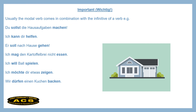There is a difference between 'du sollst die Hausaufgaben machen' — you should do the homework — and 'du darfst die Hausaufgaben machen' — you are permitted to do the homework. So when you use a modal verb with another verb, only the modal verb is conjugated. For example: 'Ich kann dir helfen' — I can help you. 'Er soll nach Hause gehen' — he should go home. 'Ich mag den Kartoffelbrei nicht essen' — 'nicht' is a negation meaning 'not' — so I don't like to eat the mashed potato.